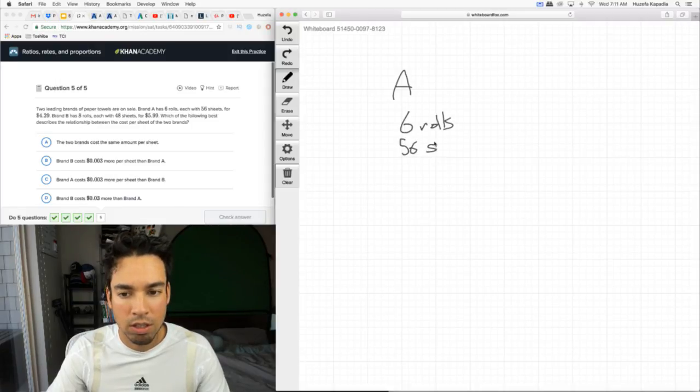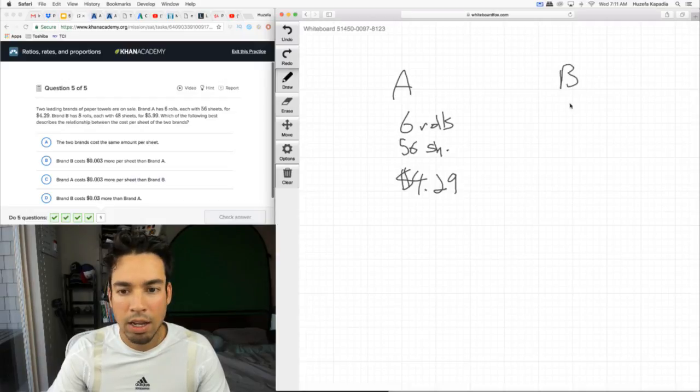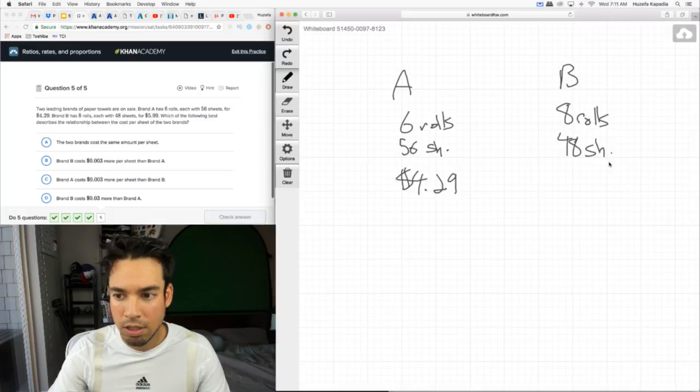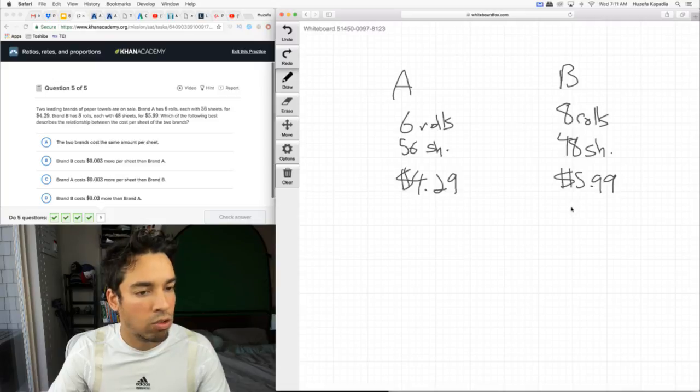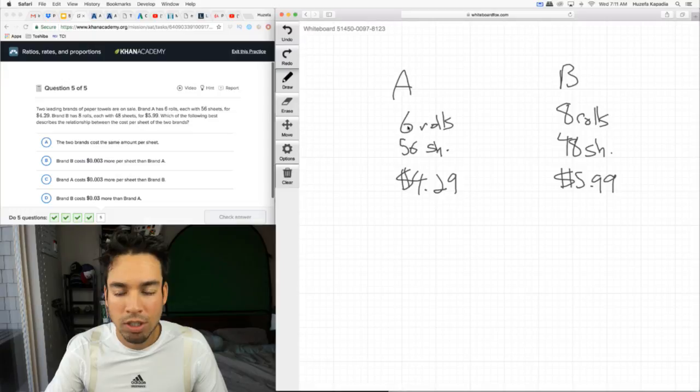Last question: Two leading brands of paper towels are on sale. Brand A has 6 rolls, 56 sheets for $4.29. Brand B has 8 rolls, 48 sheets for $5.99. Which of the following best describes the relationship between the cost per sheet of the two brands?